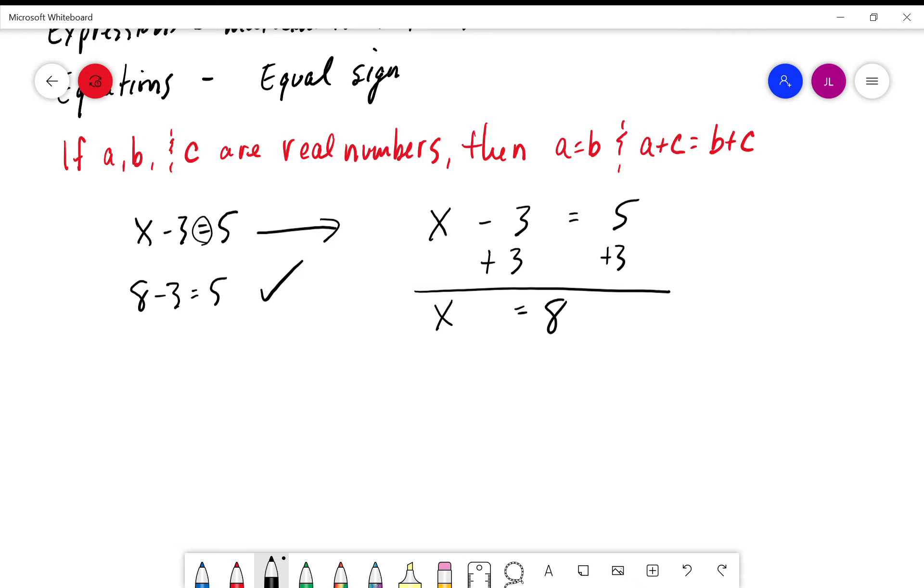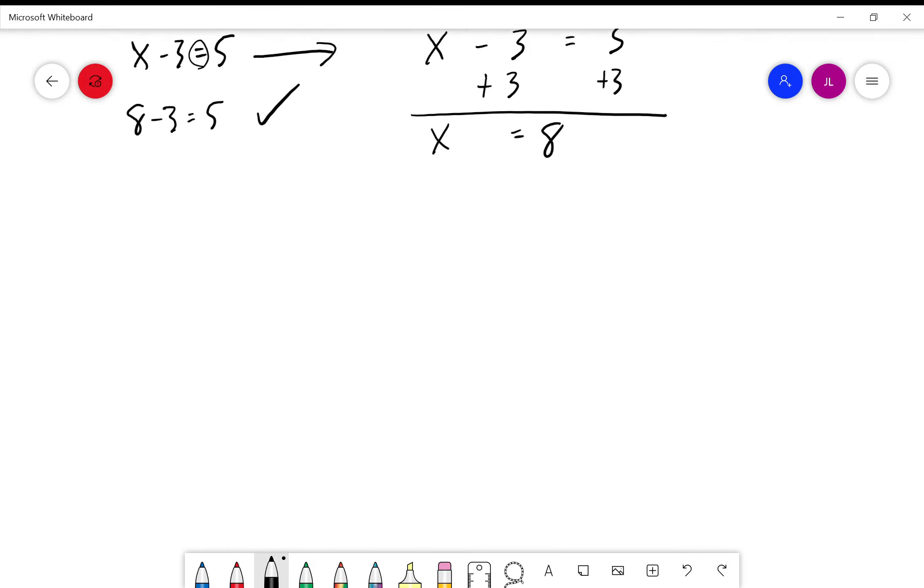Let's look at a different example here, one that brings our distributive property into play as well. Let's look at where we might have, oh I don't know, let's say five is equal to negative two times three x minus one minus